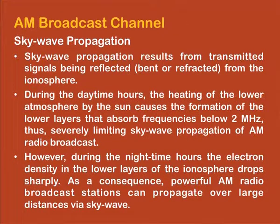The second kind of propagation which can also be used for AM broadcast is sky wave propagation. It provides slightly higher range compared to ground wave propagation, and the phenomenon assisting AM broadcast is the ionosphere. In sky wave propagation, transmitted signals are reflected from the ionosphere and then reflected from the ground, allowing signals to propagate to longer distances. However, during daytime, higher solar activity causes ionospheric layers to form at lower atmospheric levels, absorbing most frequencies below 2 MHz.